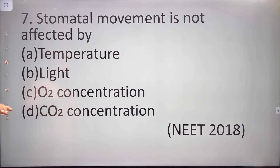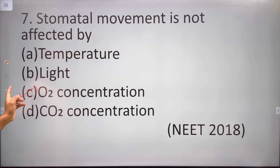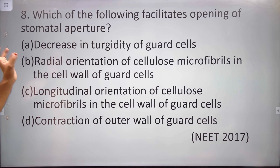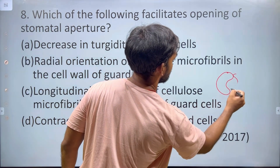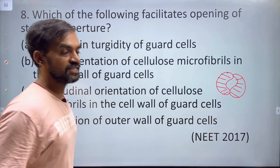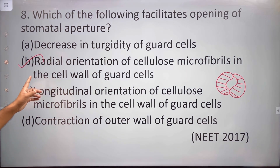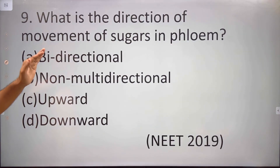Stomatal movement is not affected by oxygen. Temperature, light, and carbon dioxide affect stomatal movement and opening. The stomatal aperture diagram shows the radial orientation of cellulose microfibrils in the cell wall of guard cells — this is important for NCR aperture questions.